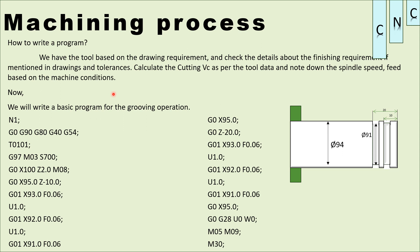This is the basic programming. The component is 94mm outer diameter and 91mm inner diameter. Depth is 10mm and 20mm — this is the drawing level. First, N1 is the sequence number. The first block is: G0, G90, G80, G40, G54. G90 is absolute programming, G80 is canned cycle cancel, G40 is tool compensation cancel, and G54 is the work offset.